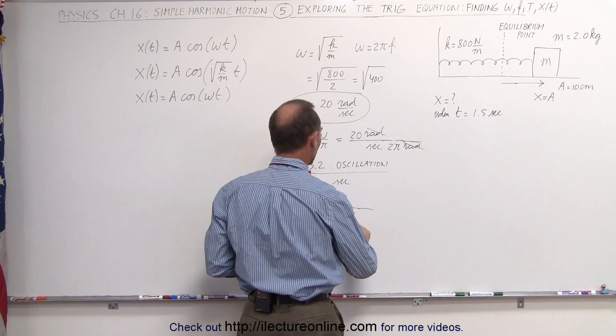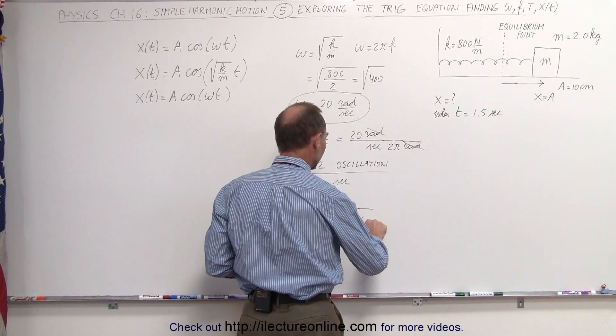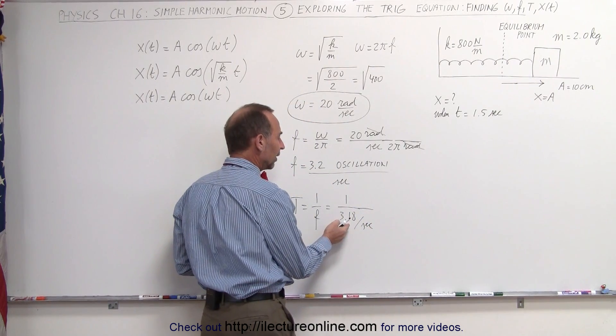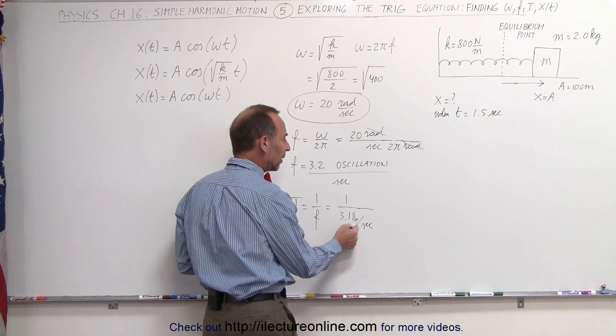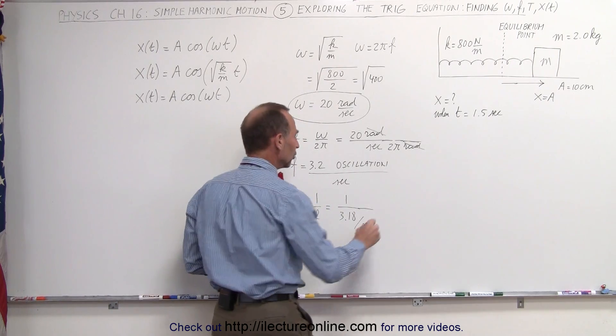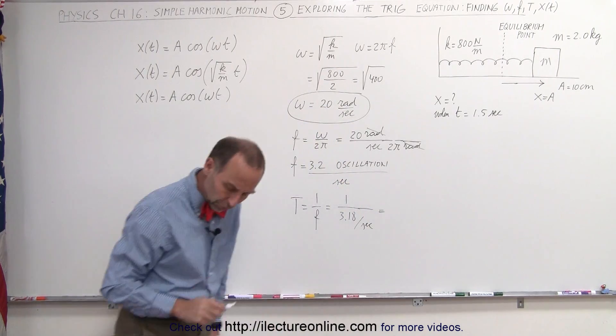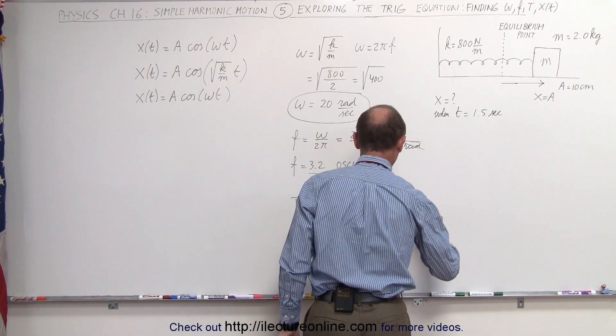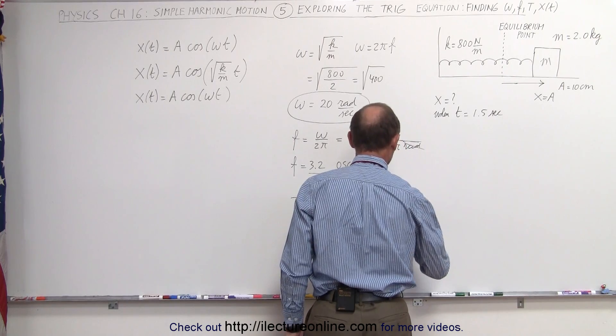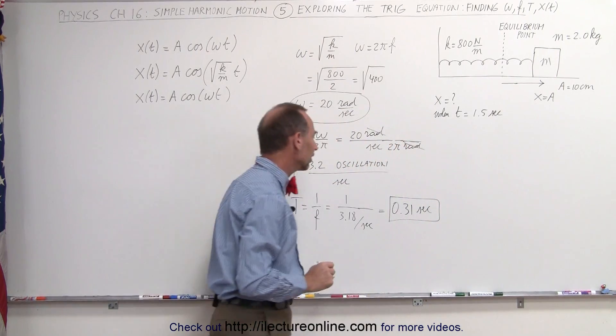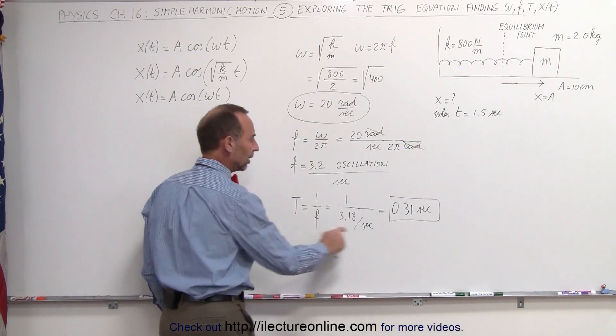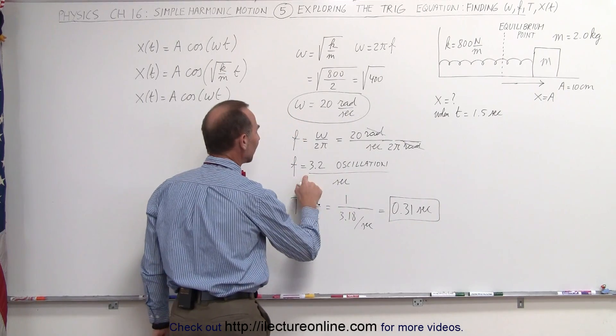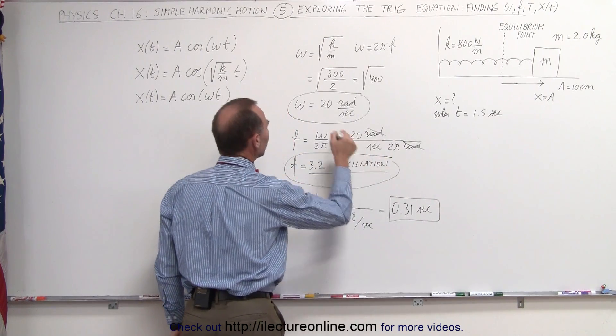Notice that this is 3.18 per second. If we have 1 over seconds in the denominator, that moves the seconds into the numerator. So this equals 0.31 seconds, the time for a single oscillation. T is the period, the time for a single oscillation. F is the frequency, the number of oscillations per second. Omega is the number of radians per second.